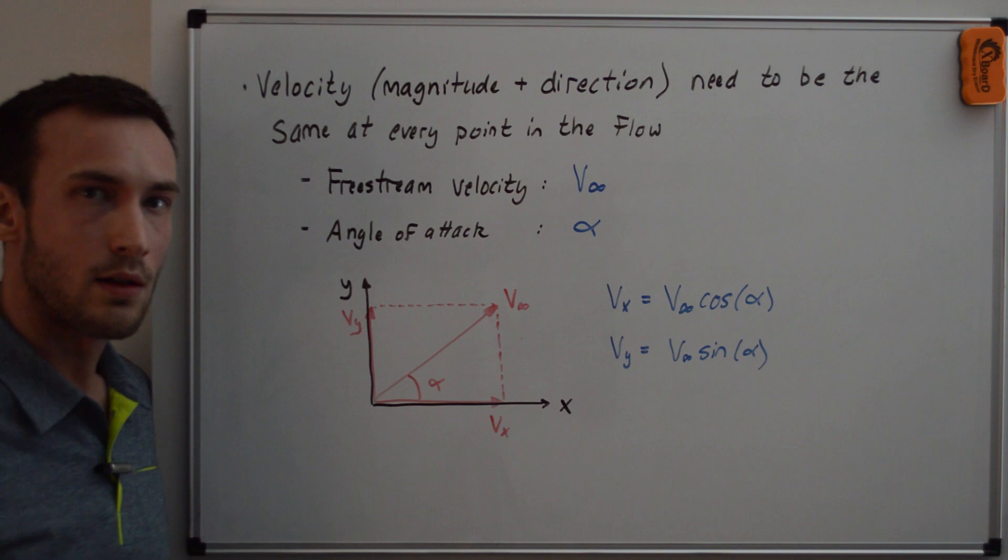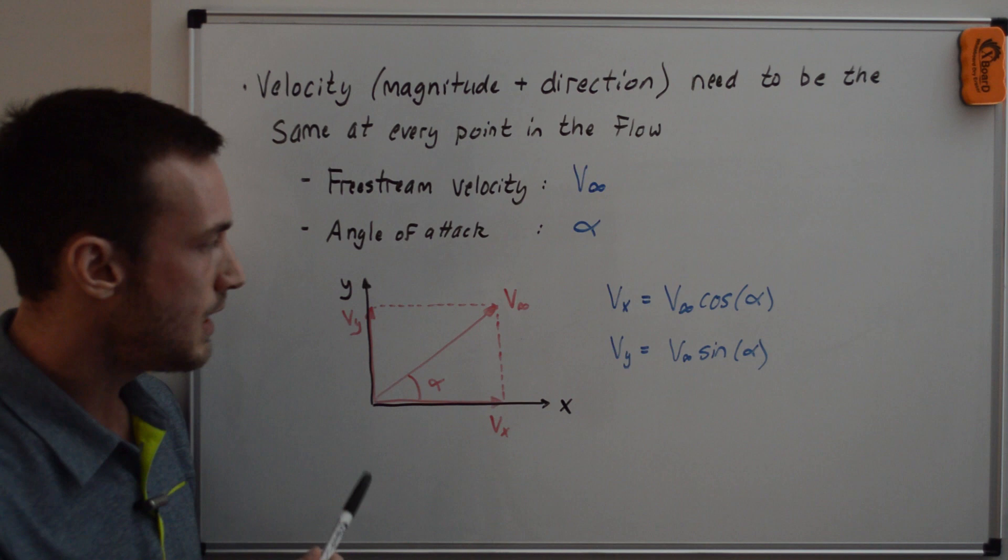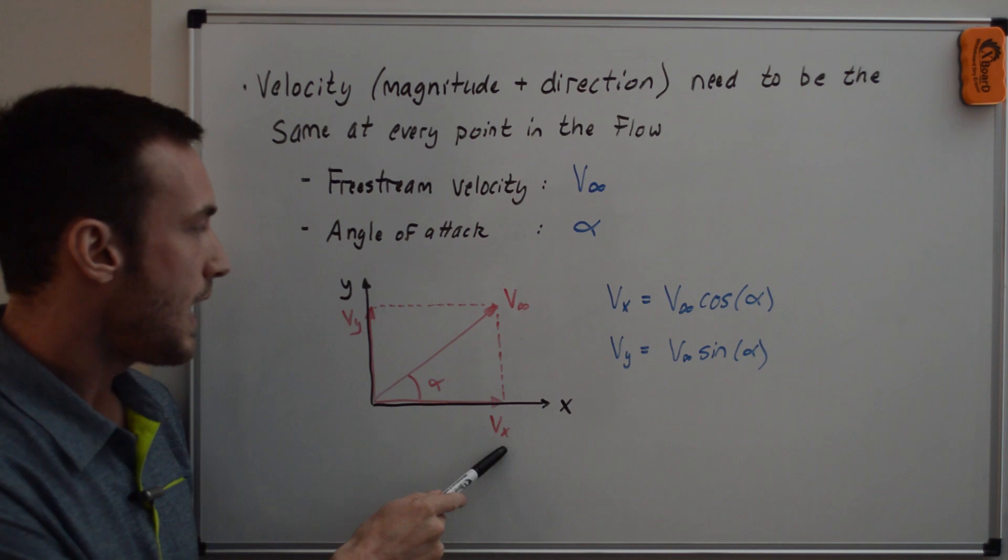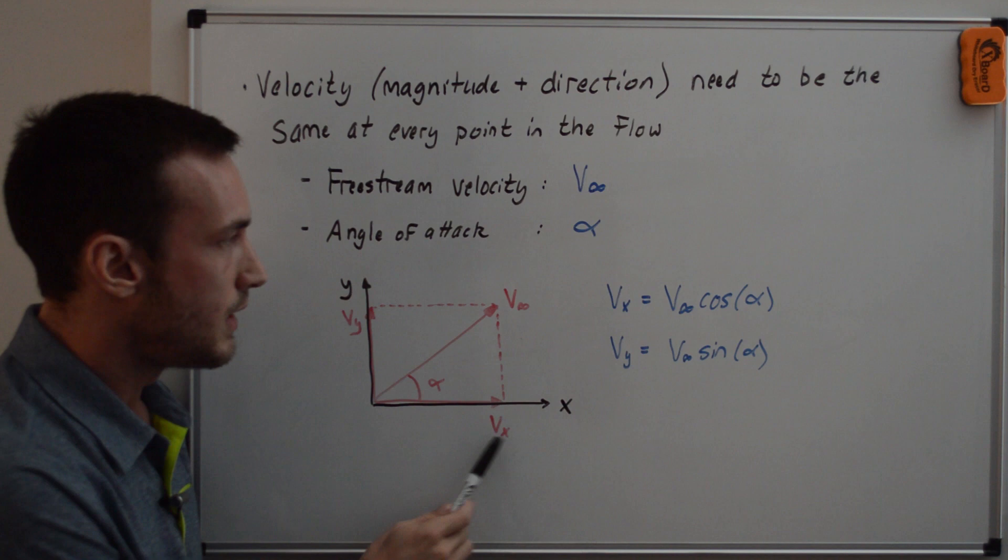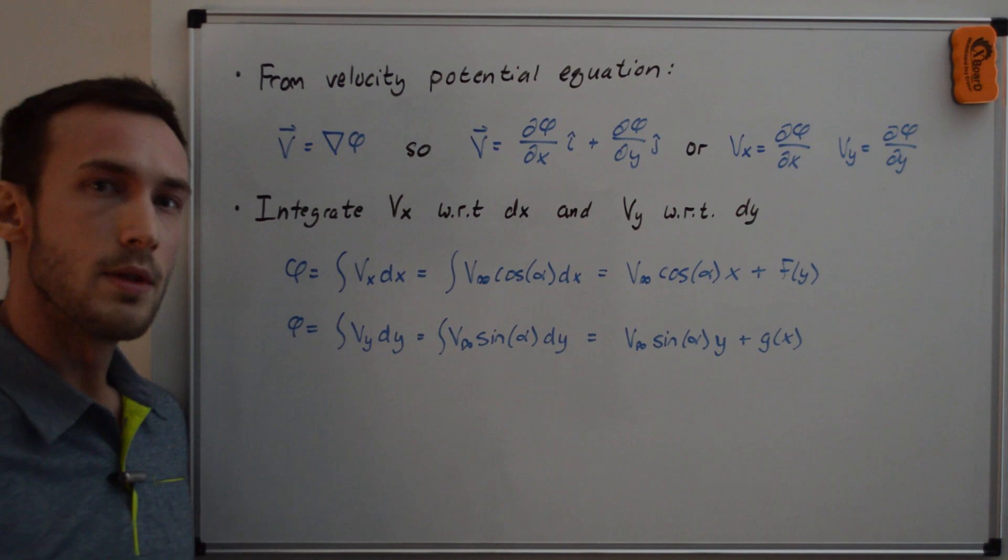So in the plot down here, we can see the velocity vector that has magnitude v infinity at an angle alpha from the x-axis. And we can define the vx and vy, so the x and the y components of this velocity, by dropping perpendiculars down to either the x-axis or to the y-axis. So for vx, we have v infinity cosine of alpha, and for vy, we have v infinity sine alpha.